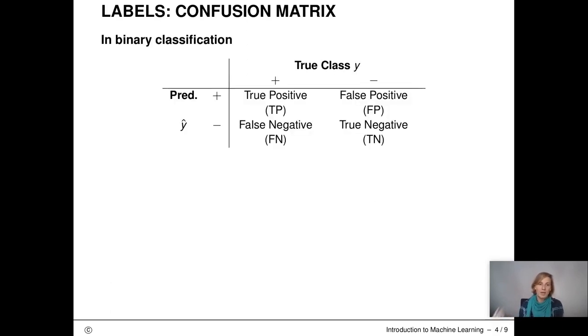In a binary classification, the entries in the confusion matrix have specific names. The correct classifications are called true positive or true negative. The words positive and negative are used here instead of one and zero. The errors are called false negative and false positive.